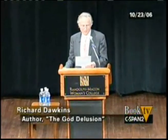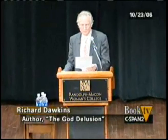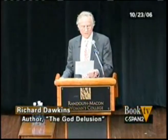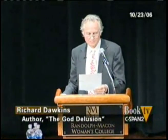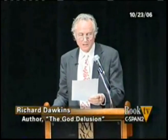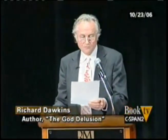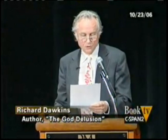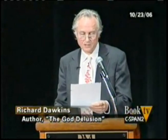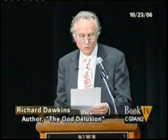How should we interpret Haldane's 'queerer than we can suppose'? Queerer than can in principle be supposed? Or just queerer than we can suppose, given the limitation of our brain's evolutionary apprenticeship in middle world? Could we, by training and practice, emancipate ourselves from middle world, tear off our black burqa, and achieve some sort of intuitive — as well as just mathematical — understanding of the very small, the very large, and the very fast?